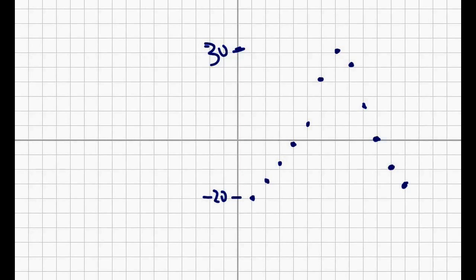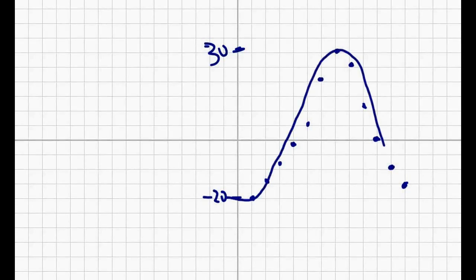You plotted those points, graphed them on your calculator, then went to your regression equation and it drew the regression. Once you do your regression formula on your calculator and draw the graph, it's going to make this into a sine graph. Even if the points don't line up perfectly, remember that's the whole point of regression — it does the best it can for the points and draws the best curve that fits.